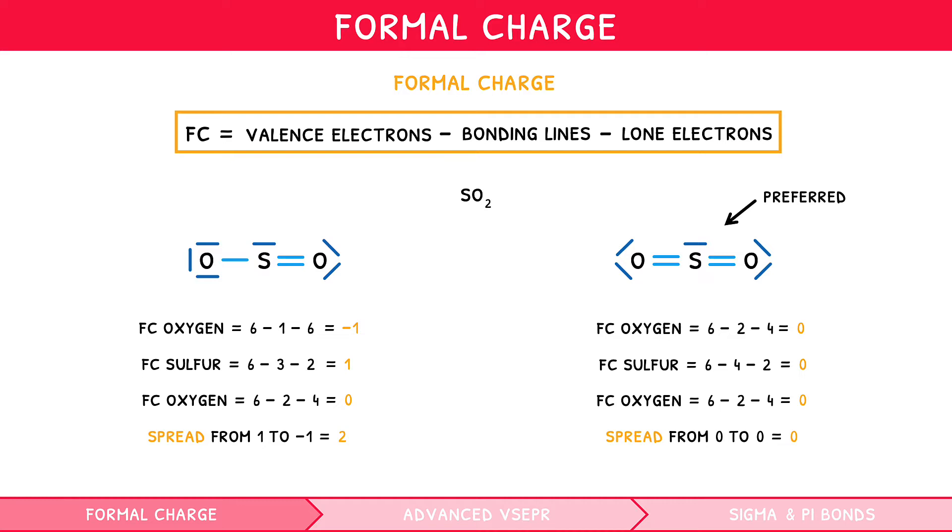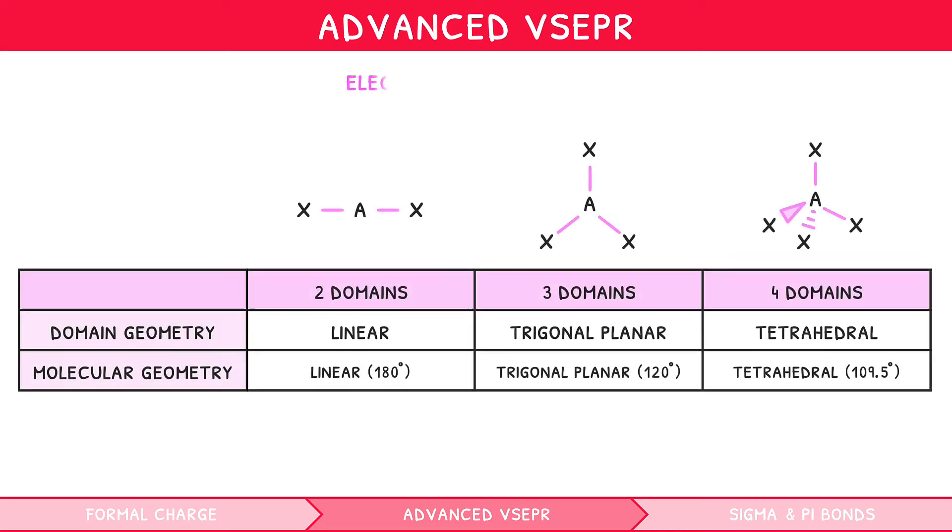Nevertheless, make sure you are comfortable with the process, as it comes up in lots of exam questions. For you to nail your exams however, you also need to know all your VSEPR structures. Our topic 4 video series covered the arrangement of electrons up to 4 domains. However, for your IB higher-level syllabus, you need to know all 6 domains.